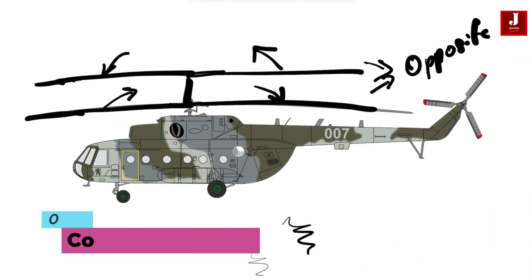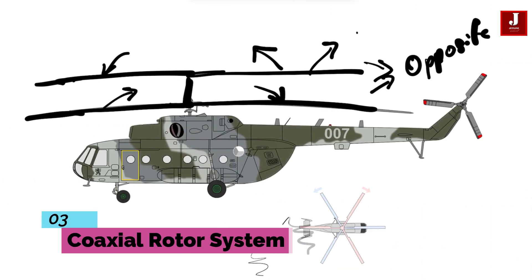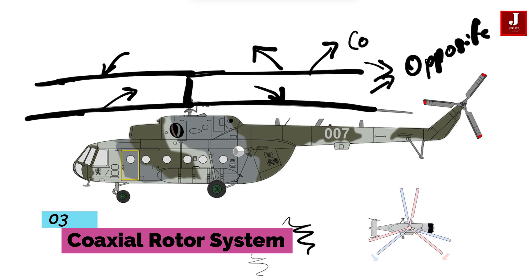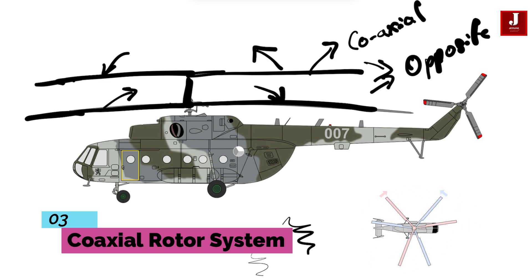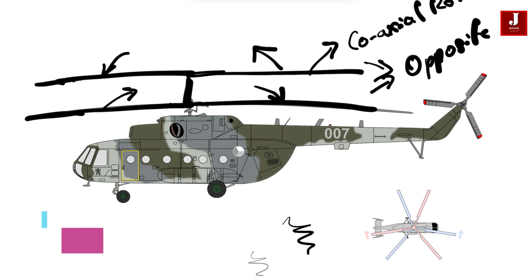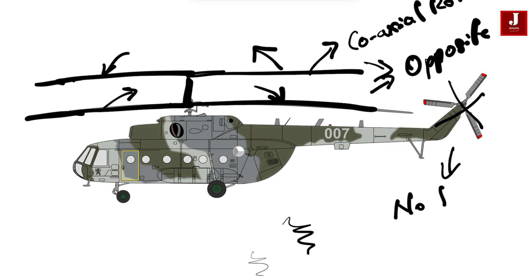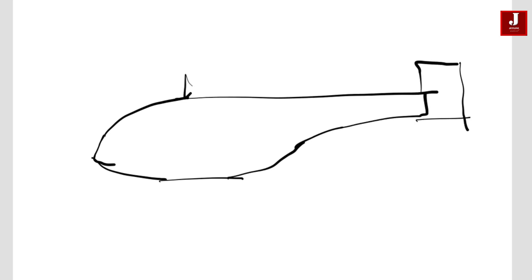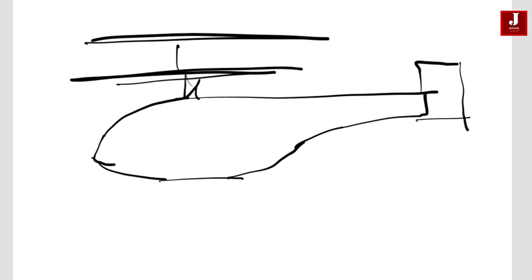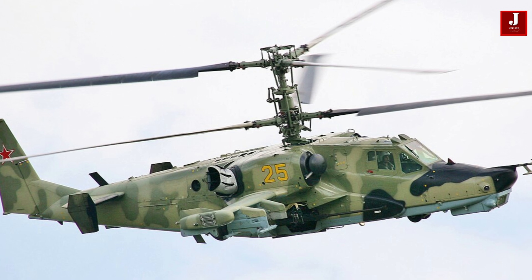Then, we have the coaxial rotor system, which consists of two rotors mounted one above the other on the same mast, rotating in opposite directions. This innovative design minimizes the need for a tail rotor, allowing for a more compact helicopter structure. Coaxial rotor systems can be found in helicopters such as the Kamov KA-50.